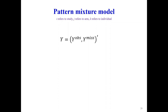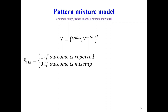To describe the model briefly: we have our outcome Y, which is the full data. We consider that the full data is a mixture of the observed outcomes Y-obs and the missing outcomes Y-miss. We then define the dropout indicator R, which takes value one if the outcome is reported in study i, group j, for a given participant, and value zero otherwise.